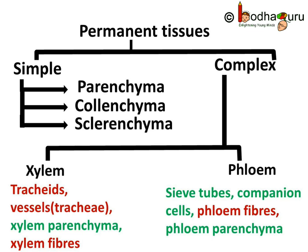Xylem consists of four different types of cells: tracheids, vessels (that is, tracheae), xylem parenchyma, and xylem fibers. Of these, only xylem parenchyma consists of living cells. Phloem, which is another type of complex permanent tissue, also has four types of cells: sieve tubes, companion cells, phloem fibers, and phloem parenchyma. All of these are living cells except for phloem fibers.